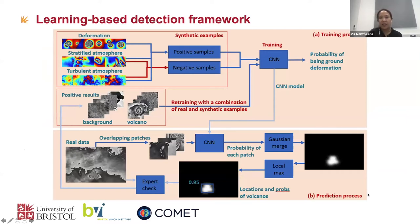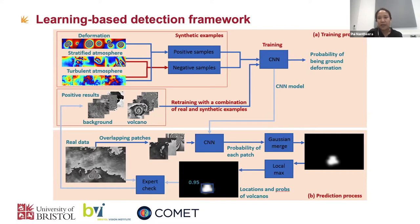This is the diagram of our deformation detection framework. The top part is the training process where we use synthetic samples to train the classifier, and we define this problem as binary classification. The positive samples are images that contain deformation combined with stratified atmosphere and turbulent atmosphere, and the negative samples are combinations of atmospheres only. We employ CNN to classify between these two signals. After training, we use the model to run the detection and an expert check, and the true positives are fed back and combined with the synthetic samples to retrain the model again.